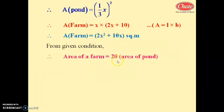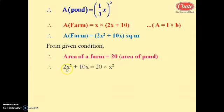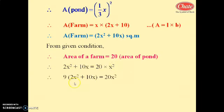From the given condition, the area of the farm equals 20 times the area of the pond. Therefore, 2x squared plus 10x equals 20 into (1/3)x whole squared. Multiplying both sides by 9 inside the bracket: 2x squared plus 10x equals 20x squared over 9.